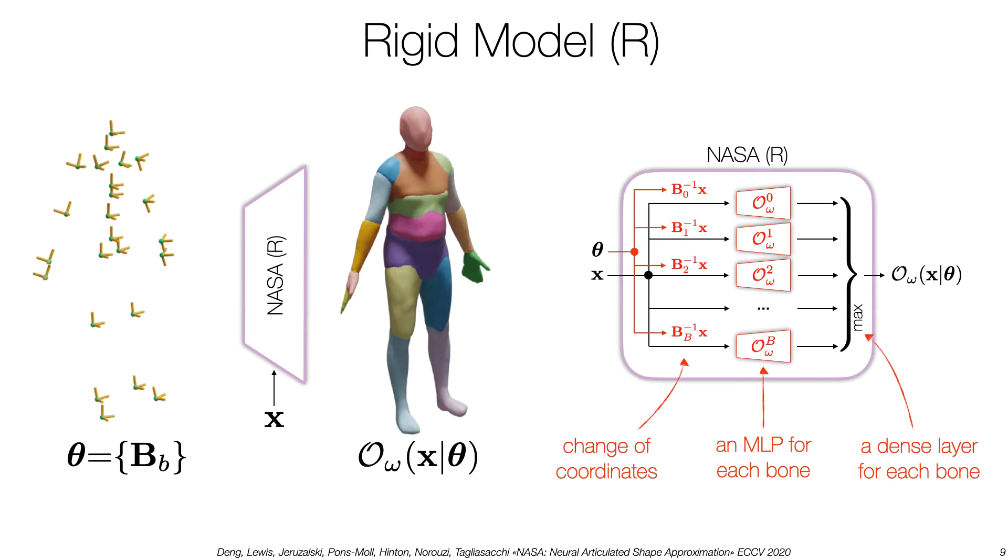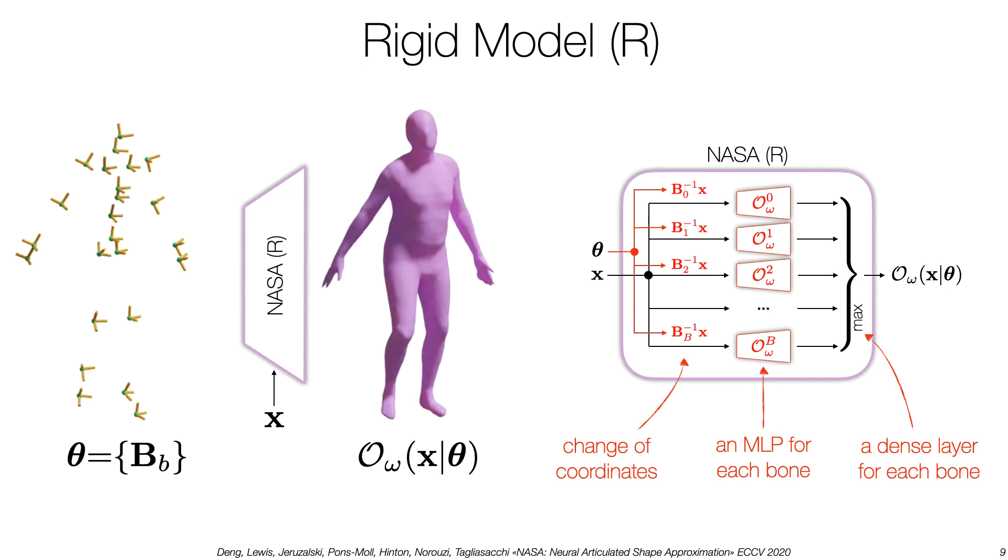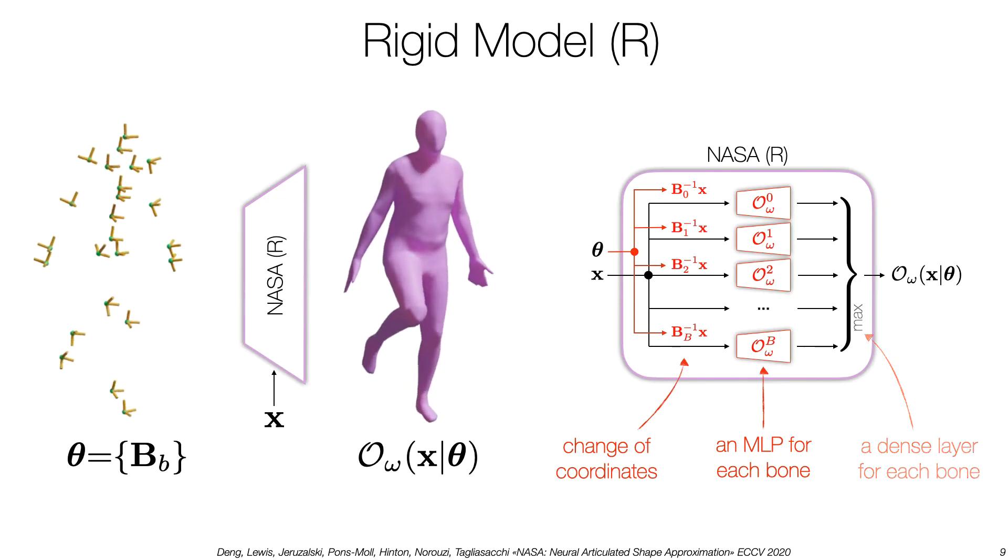To improve on this design, we take inspiration from graphics. In graphics, it's common to represent objects as a collection of rigid parts. Each of the implicit occupancy networks represents a rigid part. Note, we query the implicit function in its local coordinate frame B. We obtain the full shape by merging the parts via a max operator.